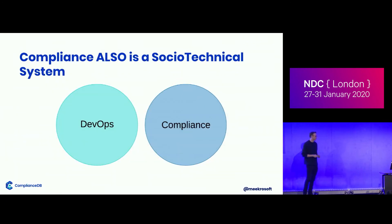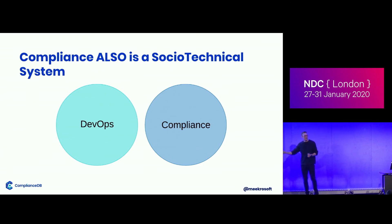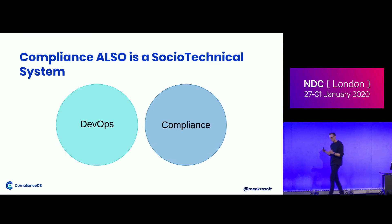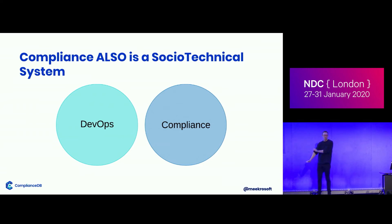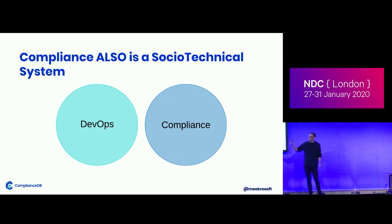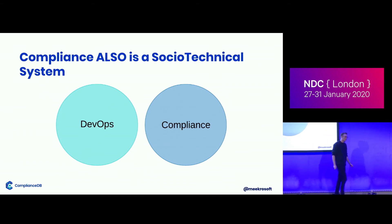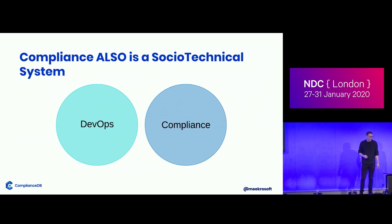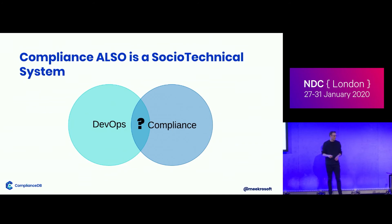But how does that fit into compliance? Well, compliance is also a socio-technical system — it's just that a lot of organizations haven't figured this out yet. Compliance, especially internal audit, is often in a very different part of the building, not part of the team. And sometimes rightly so — banks often talk about the three lines of defense against IT risk and non-compliance. The first line is the people doing the work themselves, the second line is the internal audit teams, and the third line is the financial services authority. So it does make sense that you have some people on the outside. But the problem is if the people doing compliance are not anywhere near the teams doing DevOps, it's very hard to solve this particular problem.